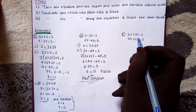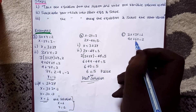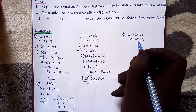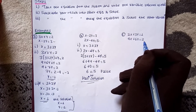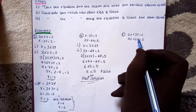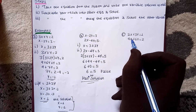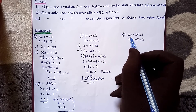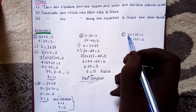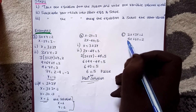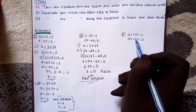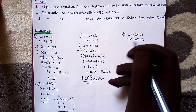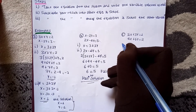Now consider the system: 2x plus 3y equal to 1, and 4x plus 6y equal to 2.